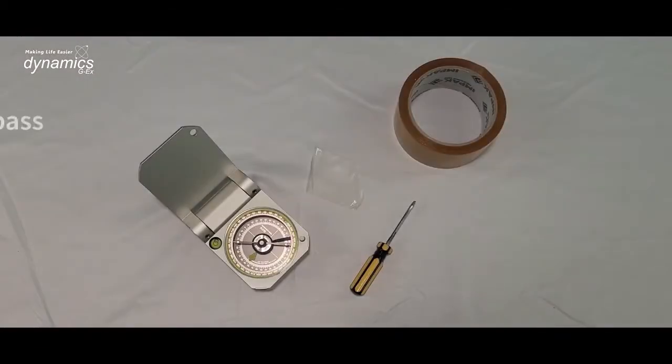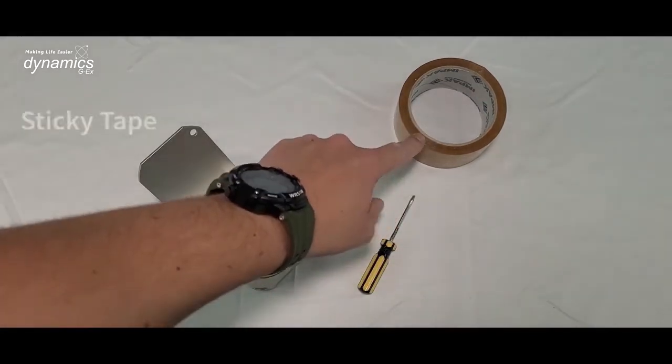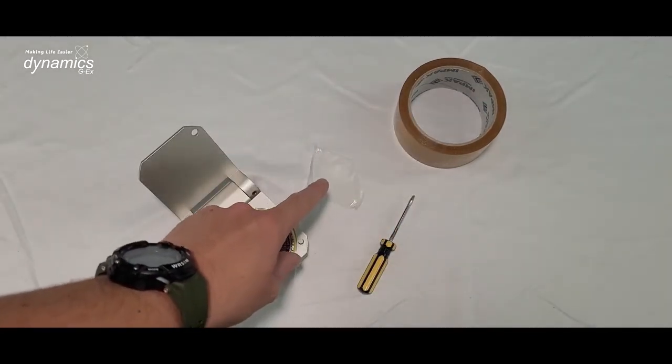So here's the basic tools. You've got your compass, you've got a flathead screwdriver as small as possible and sticky tape which you want to tear a piece of sticky tape off it.